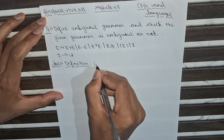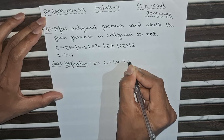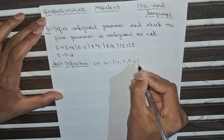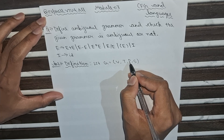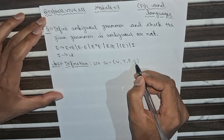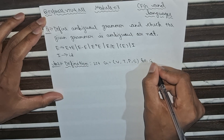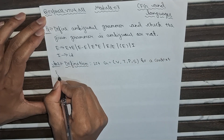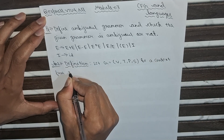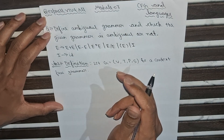Let G = (V, T, P, S), where V is variables, T is terminals, P is productions, and S is the starting variable. By this, we define a context free grammar G.